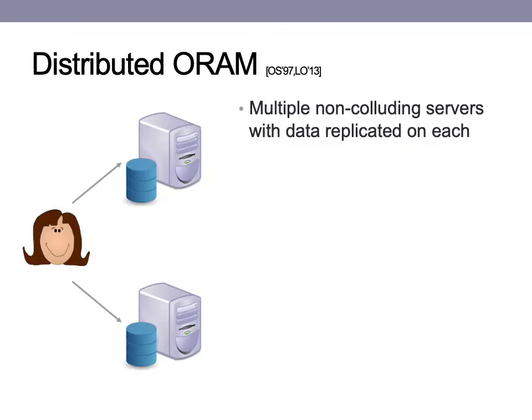The distributed ORAM model, or DO-RAM, was first introduced by Ostrovsky and Shoup in 1997 and formally defined by Lew and Ostrovsky in 2013. It was originally introduced as a variant of traditional ORAM that sought to get around the lower bound results in the single-server model. In this setting, multiple non-colluding servers act as the ORAM server. The client interacts with each of them in turn and is able to recover records while maintaining obliviousness.